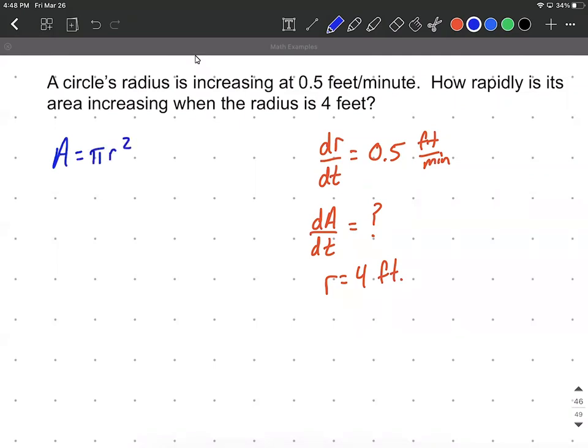Now we're going to use implicit differentiation here, differentiating with respect to our time t. We want to figure out dA/dt, the derivative of our area with respect to time, and that derivative of A is just going to be 1, equals π.